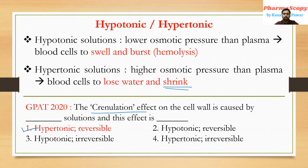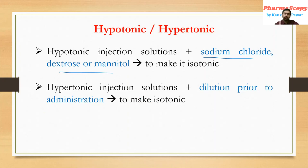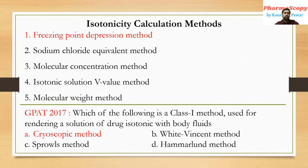Here we cleared the concepts of hypotonic, hypertonic, and isotonic solutions. If we have to administer a hypotonic solution, we must make it isotonic by adding sodium chloride, dextrose, or mannitol as tonicity adjusting agents. If we have a hypertonic injection solution, we have to dilute it to make it isotonic.